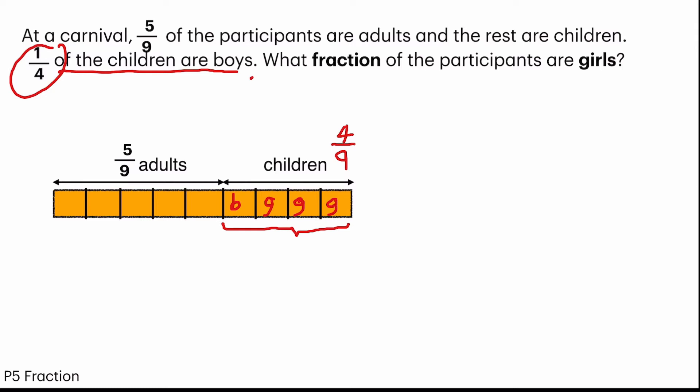So one way to refer to the model to answer the question would be that there are 3 out of 9 girls. And to simplify it, we will have to divide it by 3, and divide it by 3, and I get 1 third. So my answer is 1 third.